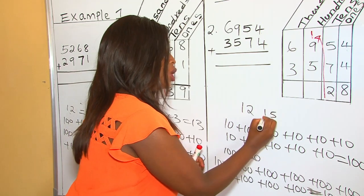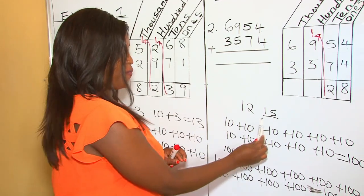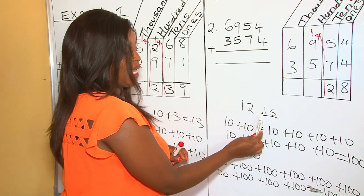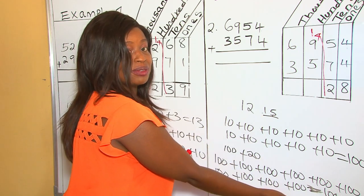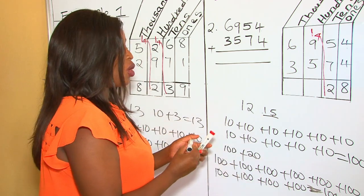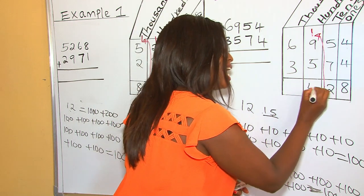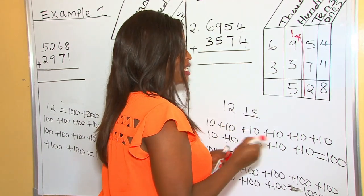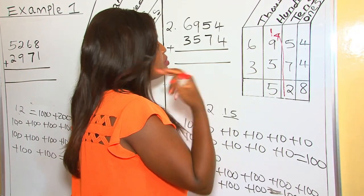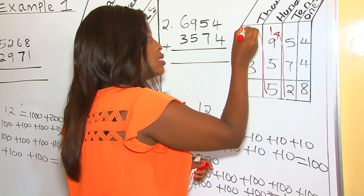in our 15 hundreds, we have 500 and 10 hundreds, which are 1000. So we record our 500s under 100s, and we carry the 1000 to the 1000 side as 1.